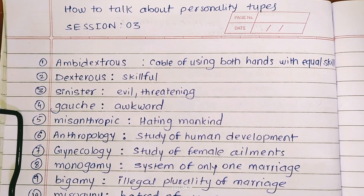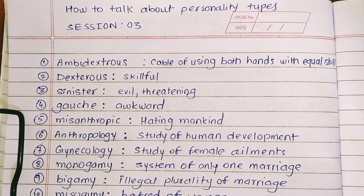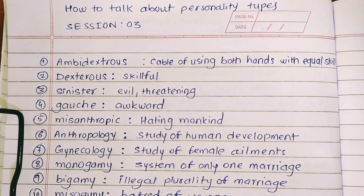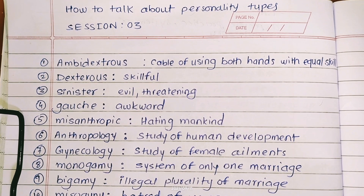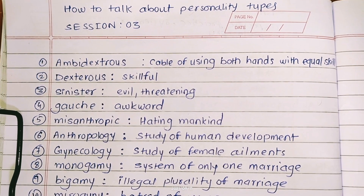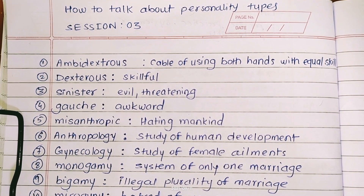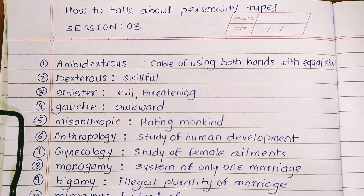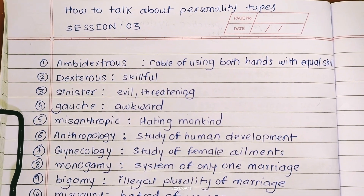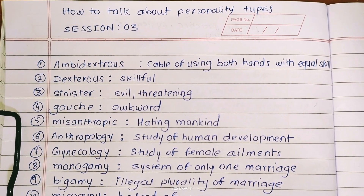My next word is dextrous. Dextrous comes from dexter meaning right hand or skill, and the suffix -ous is for adjective. So dextrous means skillful.